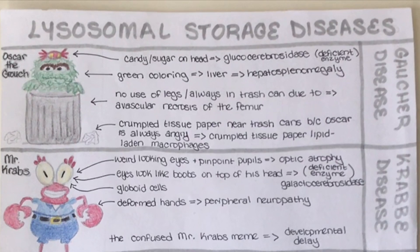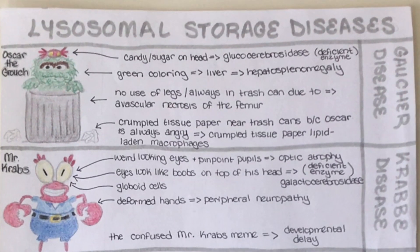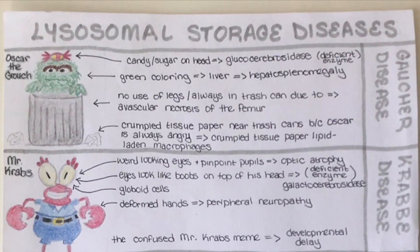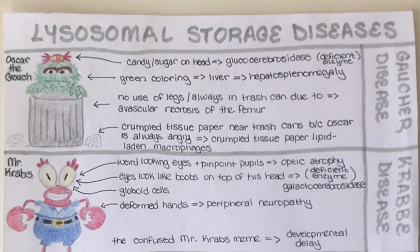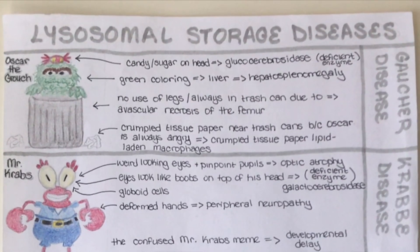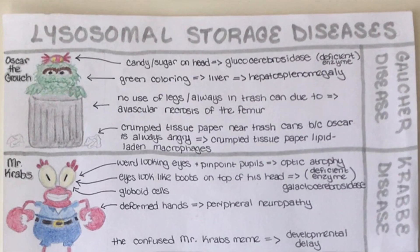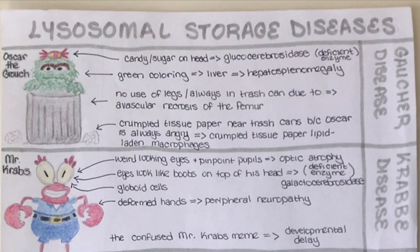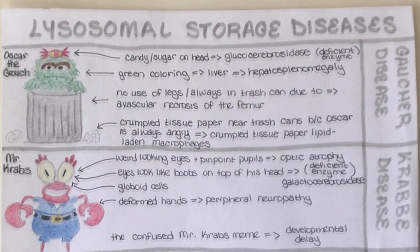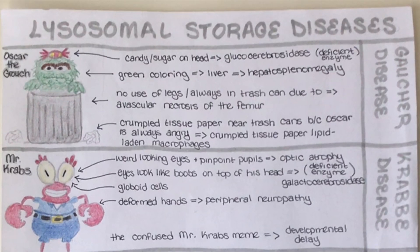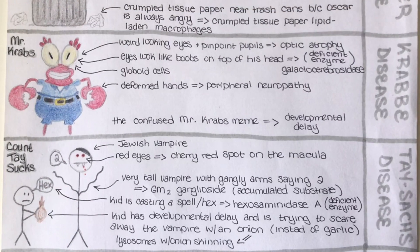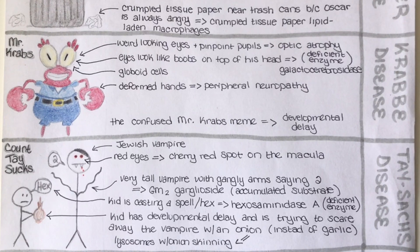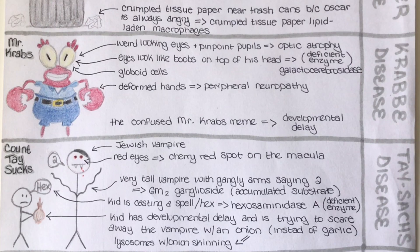Mr. Krabs' hands are obviously deformed — crabs have deformed hands — so the deformed hands help us remember the peripheral neuropathy seen in Krabbe disease. Lastly, the confused Mr. Krabs meme, popular over the past few years, helps us remember the developmental delay seen in individuals with Krabbe disease.